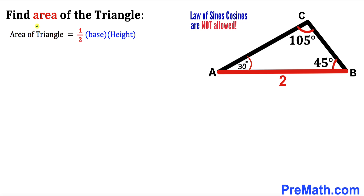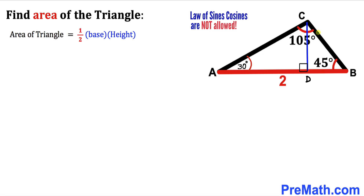Now let's recall the area of a triangle formula: area equals one-half times base times height. In our case the base is 2 units. Here's the height CD of this triangle — let me label it as lowercase h. Our task is to find the value of h in order to calculate the area.